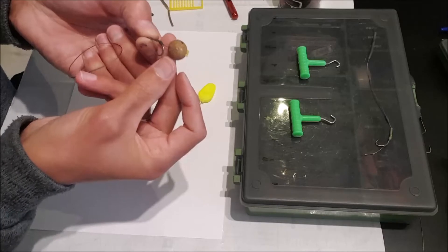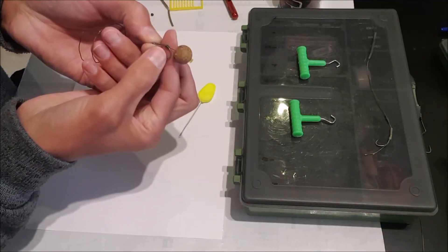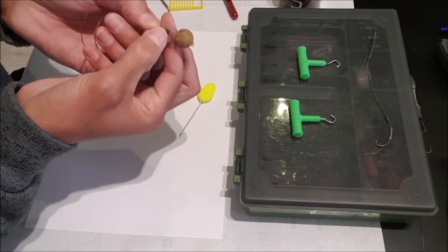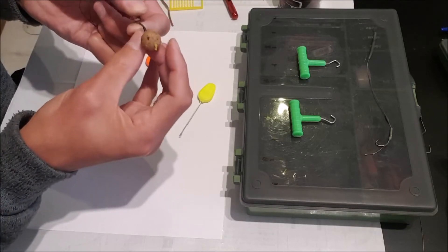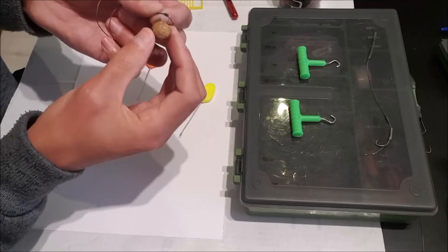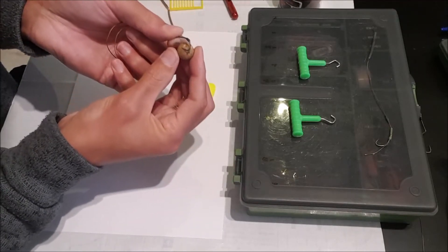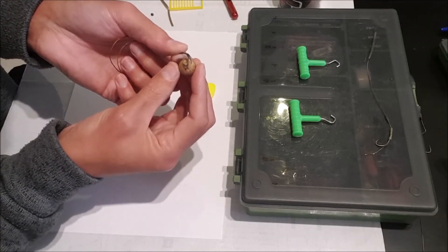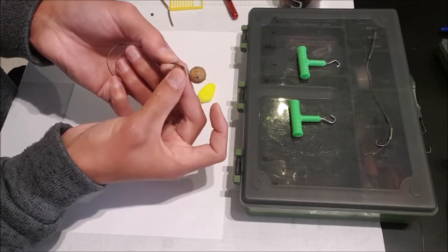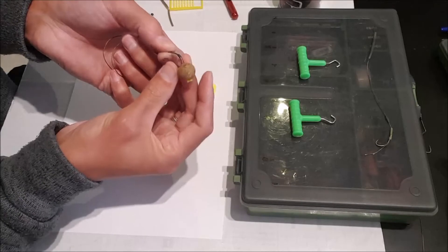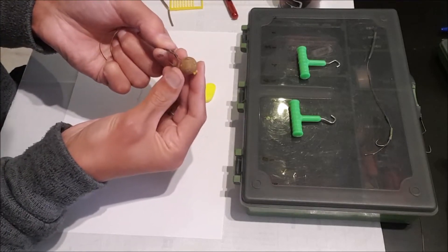This comes down to preference but a general rule of thumb is to have about 5 millimeters from the silicone tube to the boilie. You can make this longer, just be careful if it's too long your boilie can hook on the point of the hook. You can get away from that if you have some PVA nuggets you can wrap around the hook point when you cast, that way it won't get snagged. And then the PVA will dissolve once it's in the water.